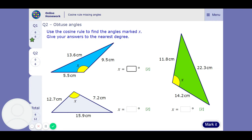So 9.5 squared plus 5.5 squared take away 13.6 squared all over 2 times 5.5 times 9.5 equals inverse cos and it tells us 128 degrees. So that one is already bigger than 90 which is good for us because it's right, bigger than 90 so we're happy with that.